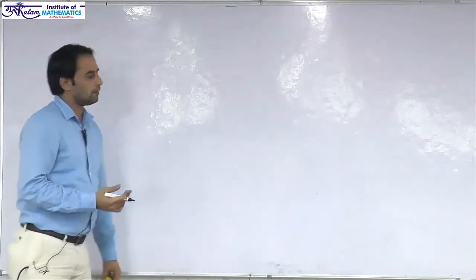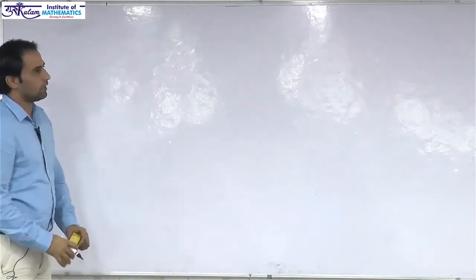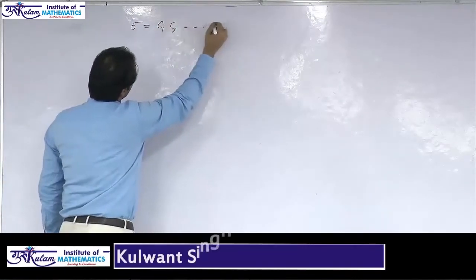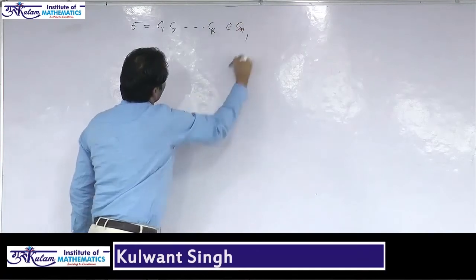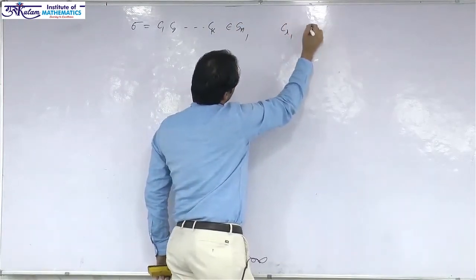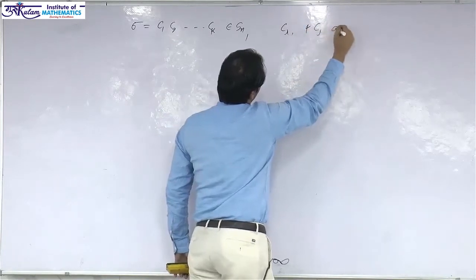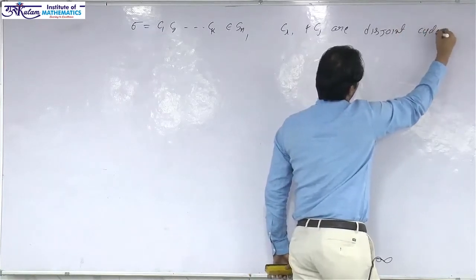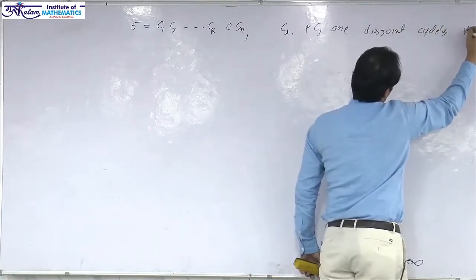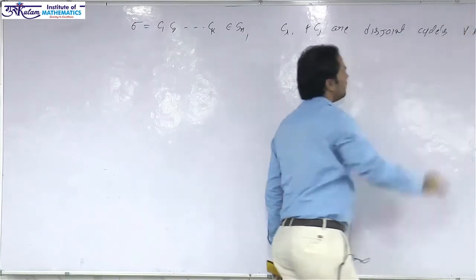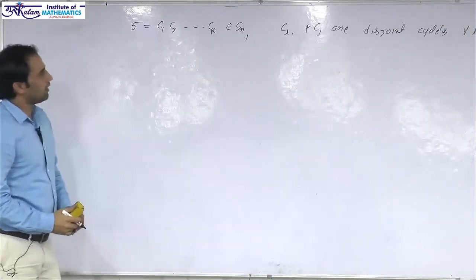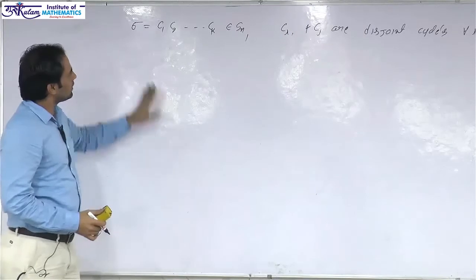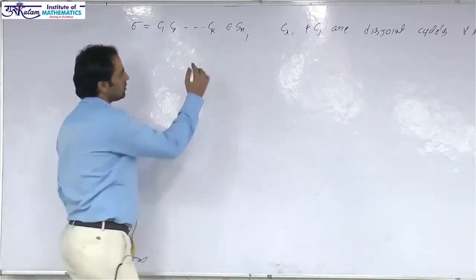Let us start with the permutation operator in general. Consider σ = c₁c₂...cₖ belonging to Sₙ, where cᵢ and cⱼ are disjoint cycles for all i ≠ j. We know that every permutation can be represented as a product of disjoint cycles, so σ is a product of k disjoint cycles.